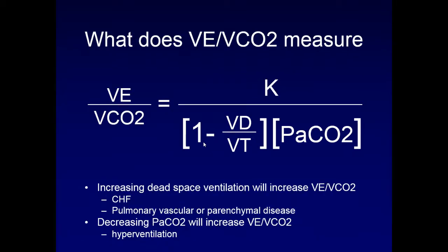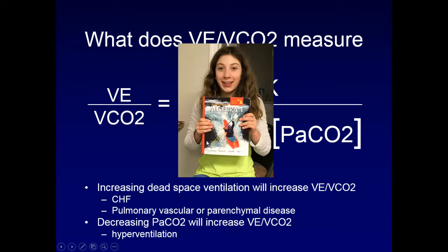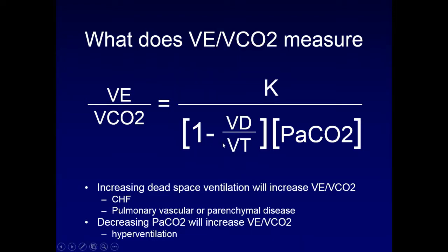With simple algebraic manipulation, bringing CO2 to the left side of the equation gives: VE/VCO2 equals the constant divided by (1 minus the dead space to tidal volume ratio) divided by PaCO2. My daughter in algebra confirmed that as the dead space to tidal volume ratio goes up, the VE/VCO2 goes up — so this number correlates directly with dead space ventilation.